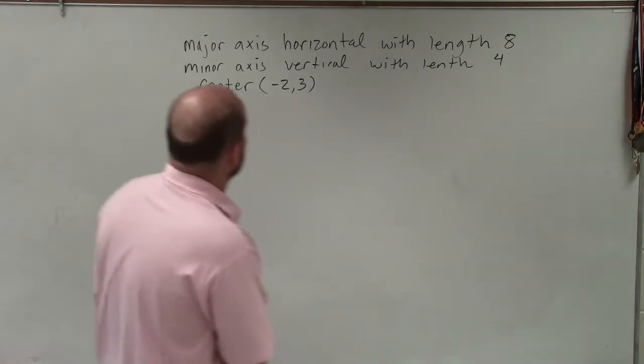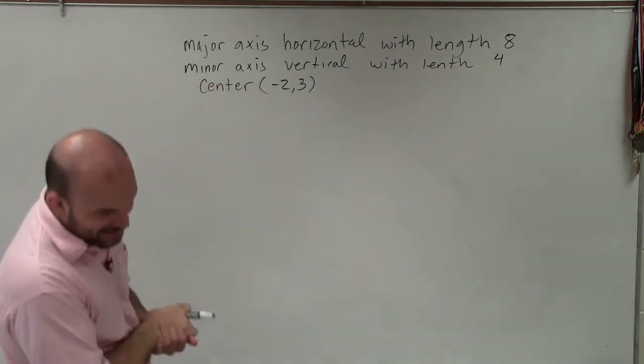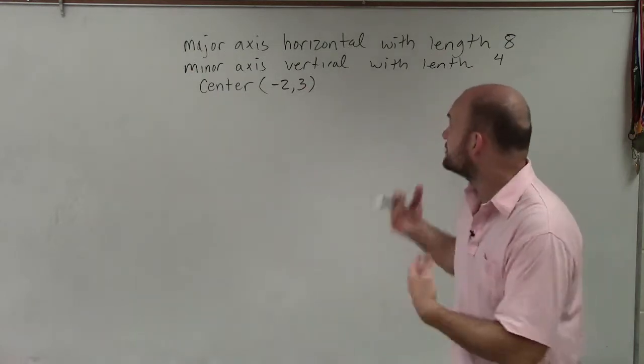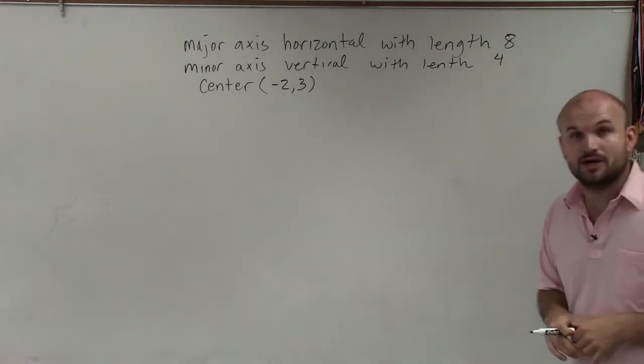Welcome, ladies and gentlemen. What I'd like to do is show you how to write the equation of an ellipse, given the major axis is horizontal with the length of 8, as well as the minor axis is vertical with the length of 4.